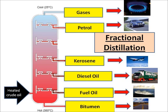The shortest chain molecules with the lowest boiling points go to the top and become gases. The longest chain molecules go to the bottom because they have high boiling points and they become bitumen. You need to know about the uses of each of the six fractions.